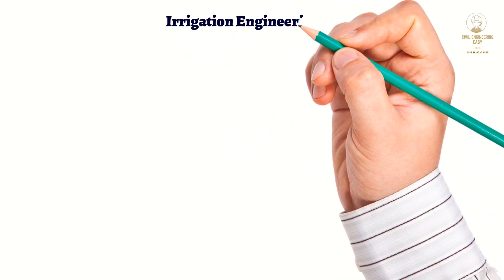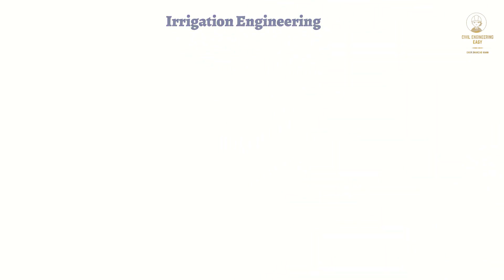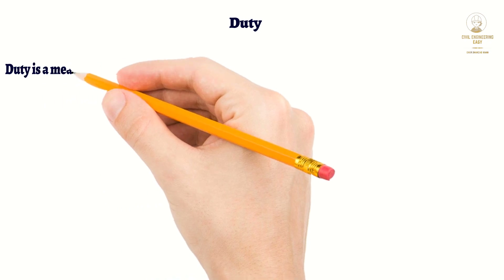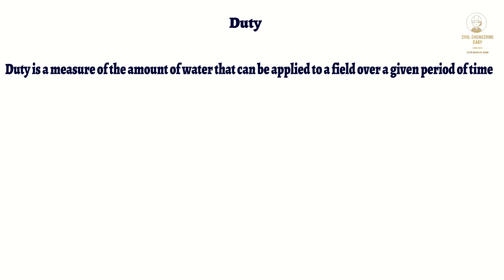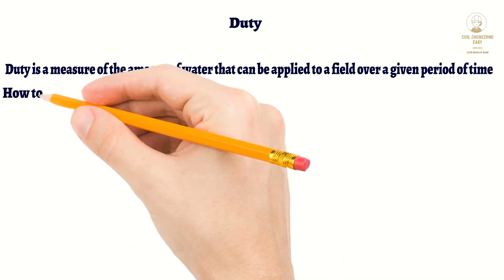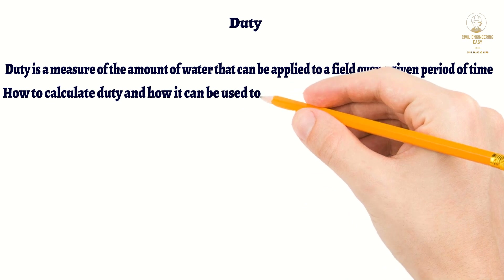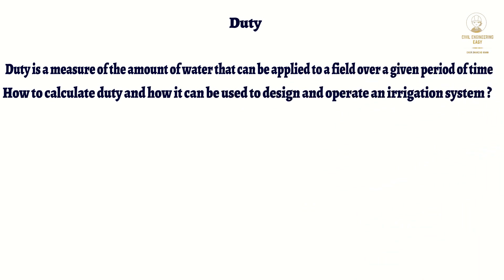Welcome to this video on irrigation engineering. In this video we will be discussing the concept of duty in irrigation systems and how it is calculated. Duty is a measure of the amount of water that can be applied to a field over a given period of time, and it is an important factor in the design and operation of irrigation systems. We will be using examples to demonstrate how to calculate duty and how it can be used to design and operate an irrigation system.